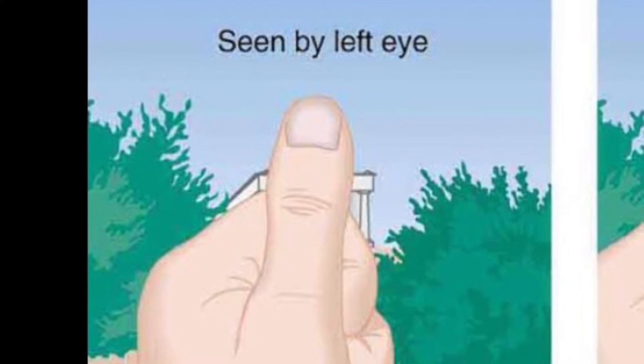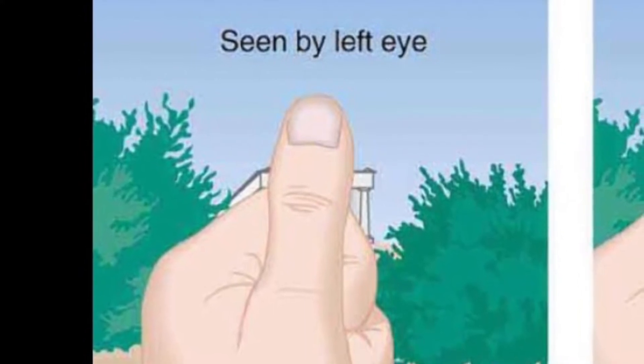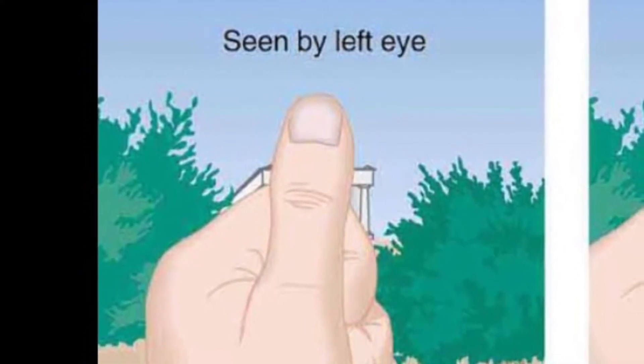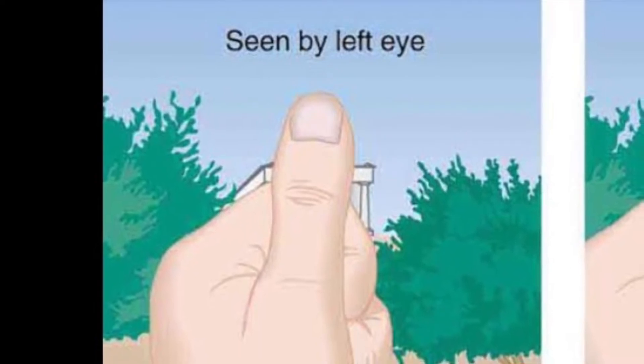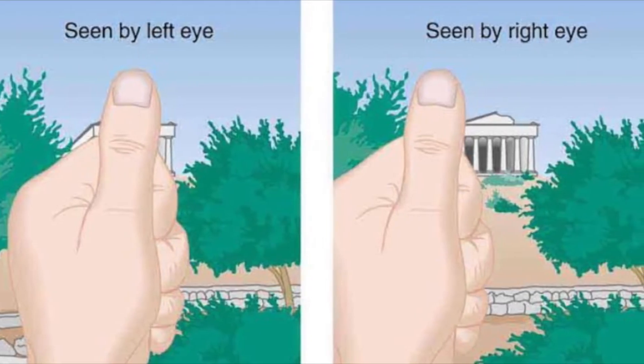If you did not notice any change, I want you to repeat the experiment again by changing the background. Now, you would have noticed any change. This change in position of your thumb is known as parallax effect. Parallax effect is nothing but the change in position of the object when viewed from different points.